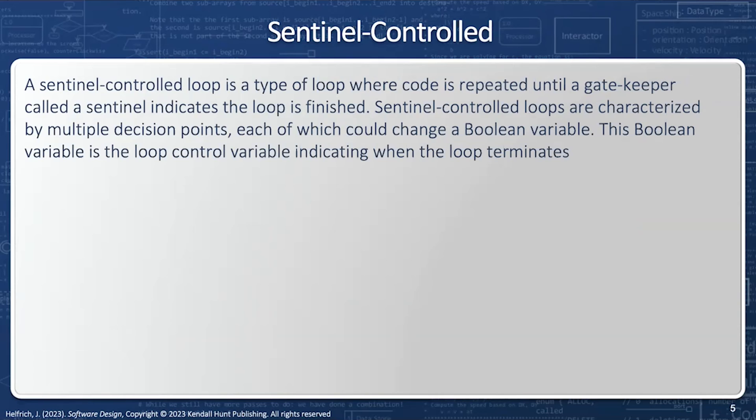A sentinel control loop is where the codes repeat until a gatekeeper called a sentinel indicates the loop is finished. Sentinel control loops are characterized by multiple decision points, each of which could possibly change our Boolean sentinel value. This Boolean variable is a loop control variable indicating when the loop terminates.